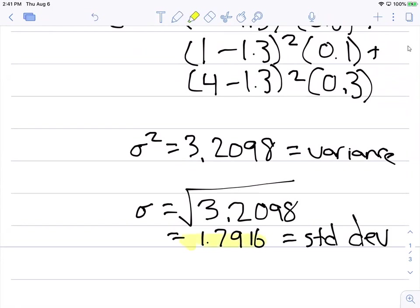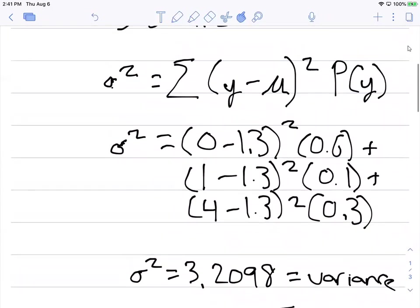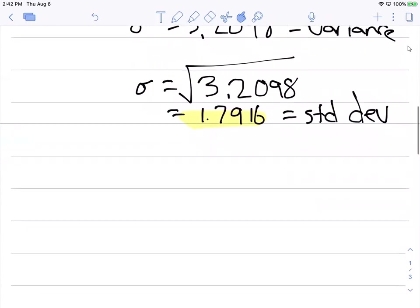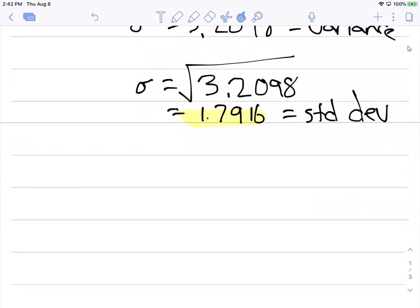So there we have it. We've got the standard deviation of 1.79 and we've got the mean value as well of 1.3. This means on average we could expect to see 1.3 warblers with the standard deviation of 1.7916.